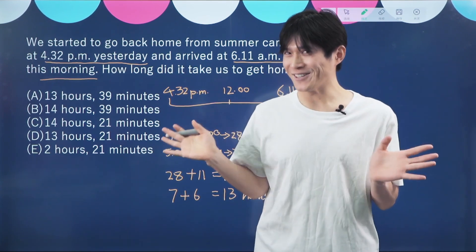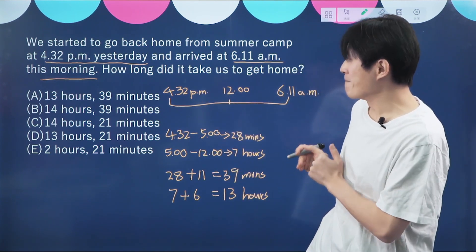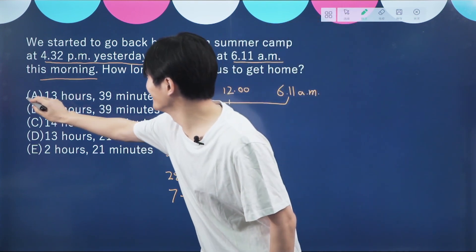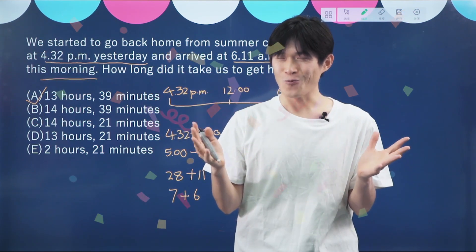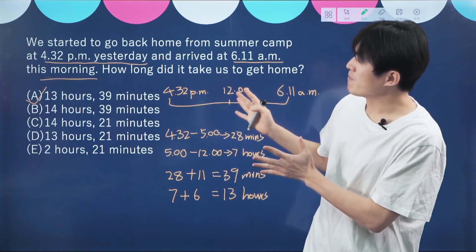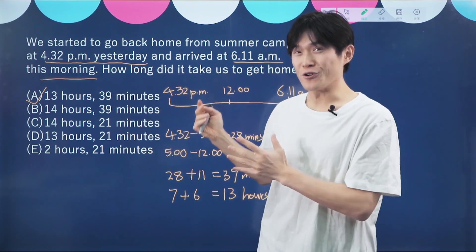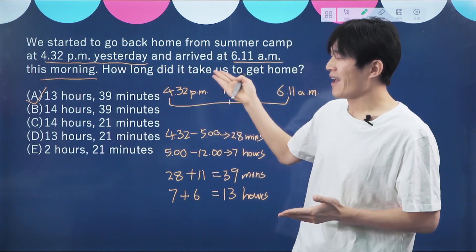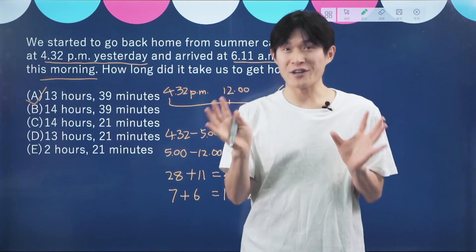We got the answer — 13 hours and 39 minutes. It's A! Congratulations, well done if you chose option A. So next time, when you notice that it's about calculating hours and minutes, you need to find the start time and the end time, and then find the duration. And that's the answer.